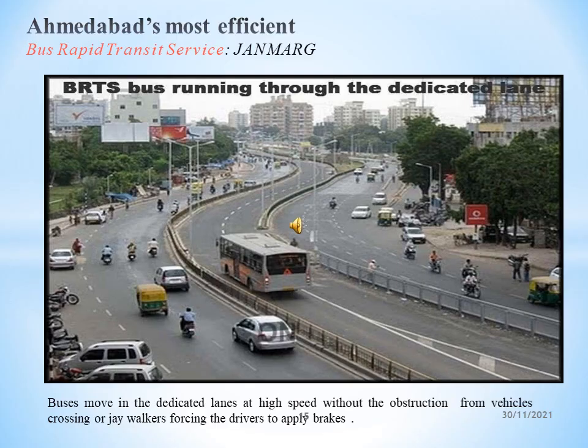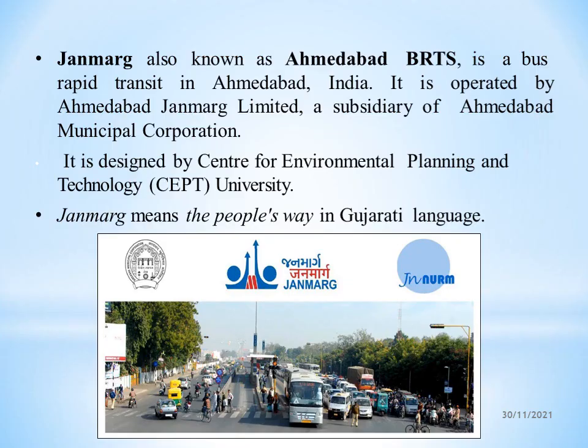As we can see in the picture, Ahmedabad's most efficient bus rapid transit service, known as Janmarg, moves in dedicated lanes at high speed without obstructions from vehicles crossing or jaywalkers forcing drivers to apply brakes. Janmarg, also known as Ahmedabad BRTS, is a bus rapid transit system in Ahmedabad, India. It is operated by Ahmedabad Janmarg Limited, a subsidiary of Ahmedabad Municipal Corporation, and was designed by the Centre for Environmental Planning and Technology University. Janmarg means 'the people's way' in Gujarati.